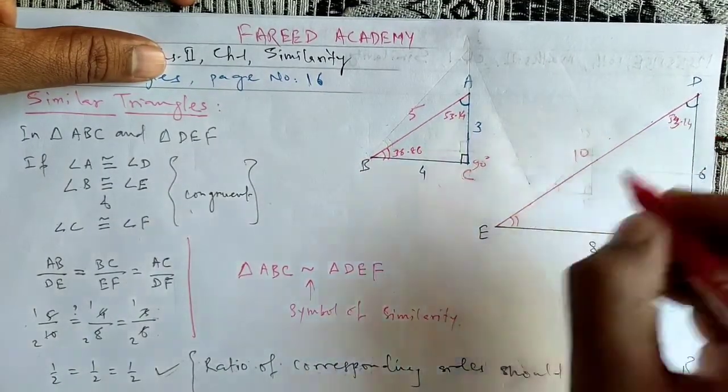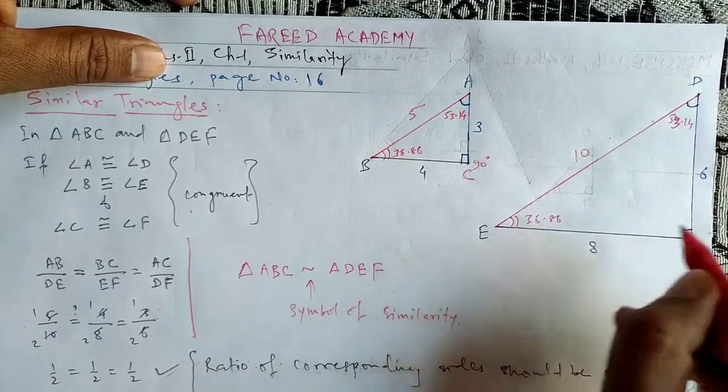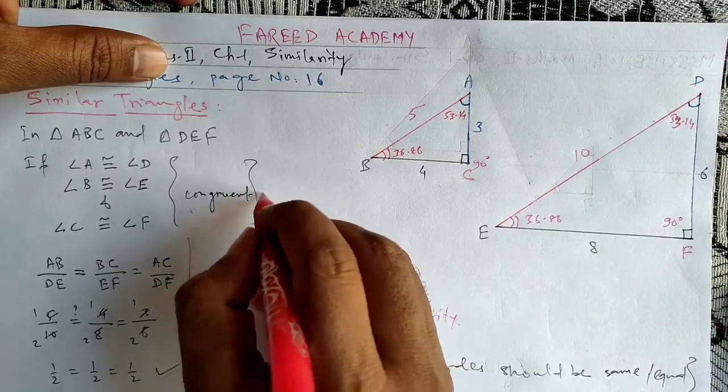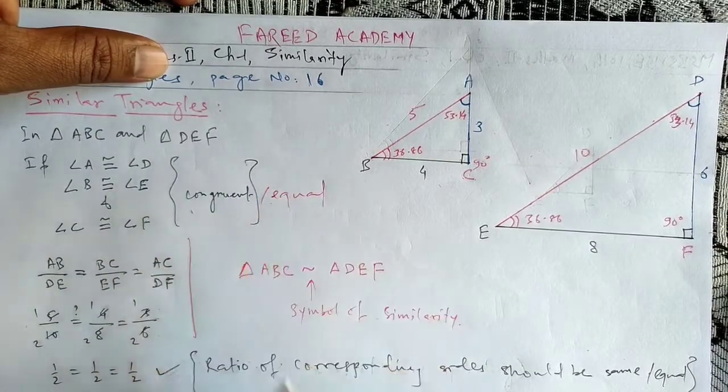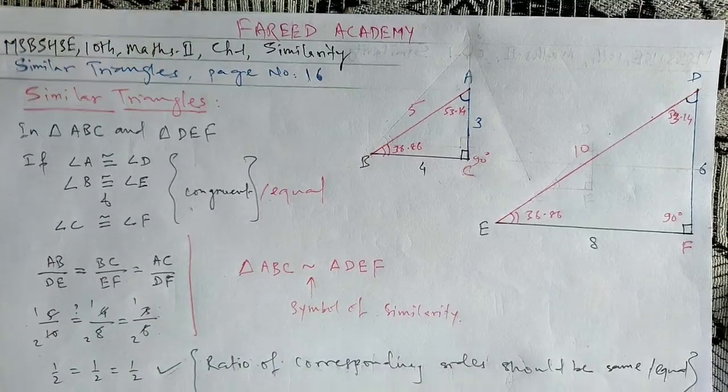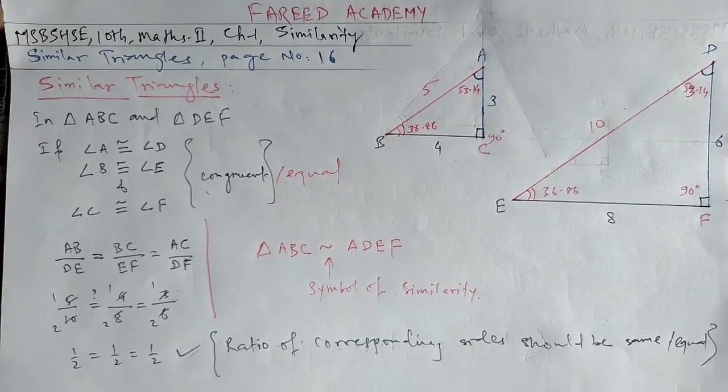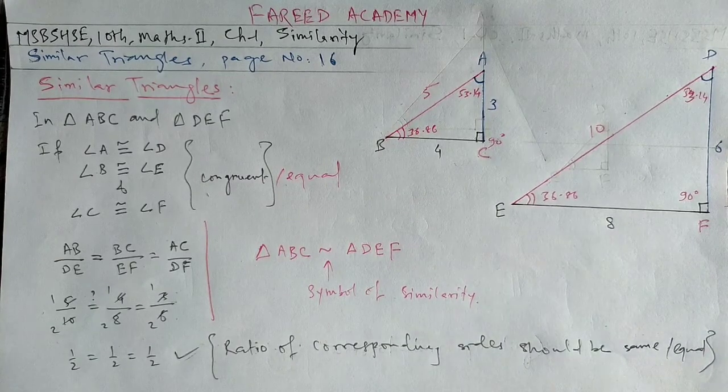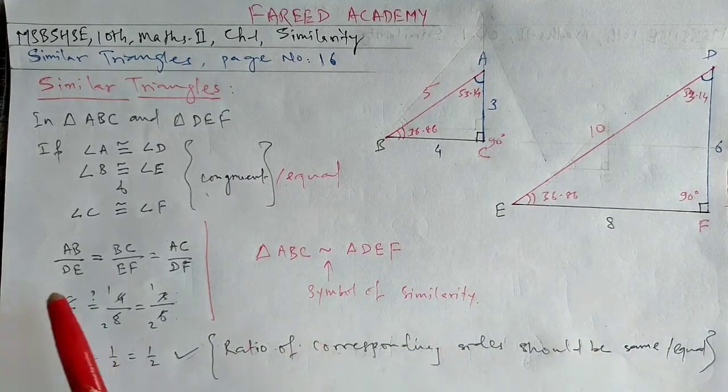So this angle is 53.14, this angle is 36.86, and this angle is 90 degrees. Congruent angles means equal angles—congruent is a similar word to equal. And the sides' ratio must be the same for the similarity condition: the three angles must be congruent and equal, and the corresponding sides' ratio must be constant.